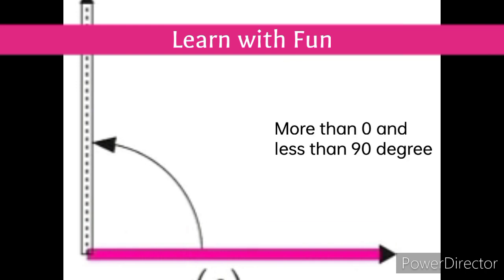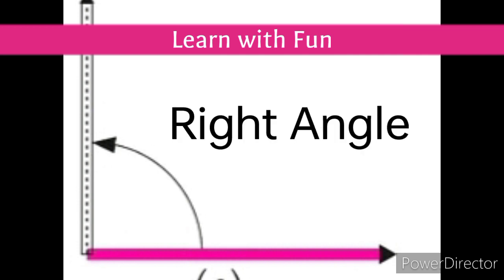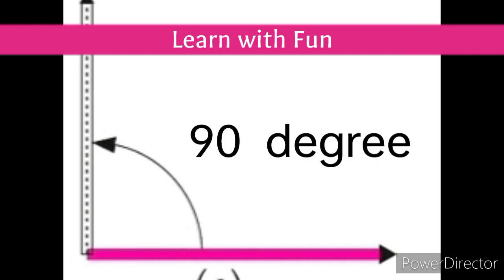The third type of angle is right angle. Let us learn the definition of right angle. An angle whose measure is 90 degrees is called a right angle. In the given figure, the measure of the angle is 90 degrees — it is a right angle. It is more than zero degree but less than 90 degrees; till 90 degrees, it is a right angle.